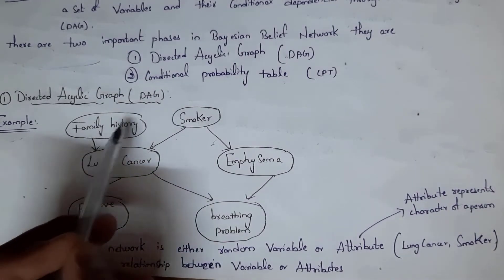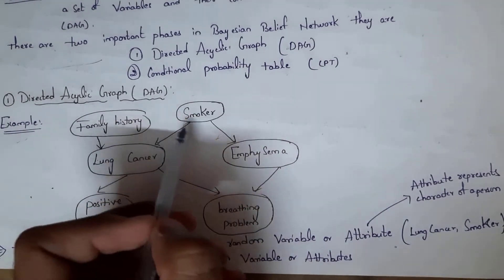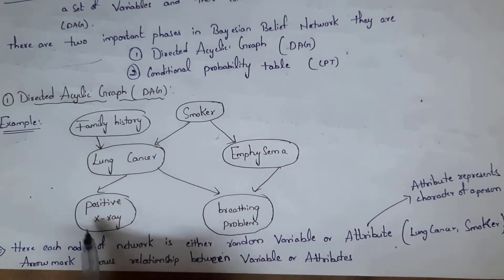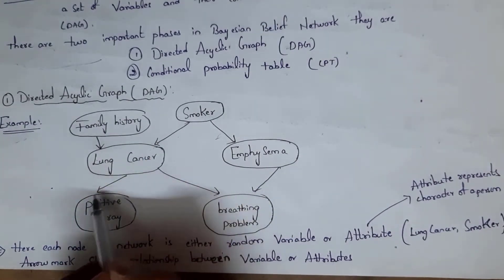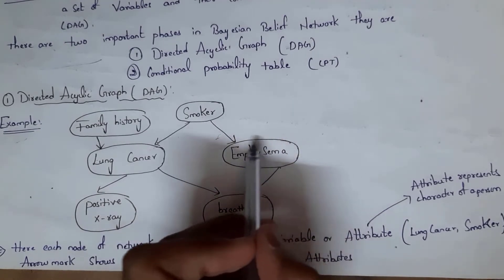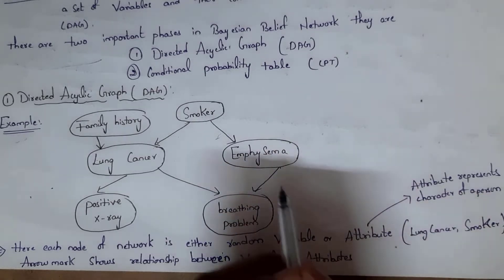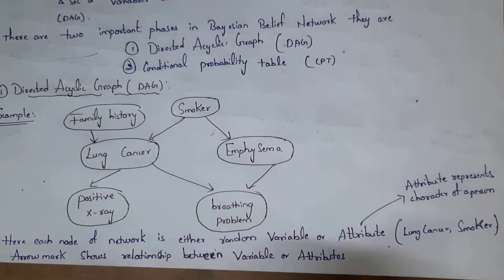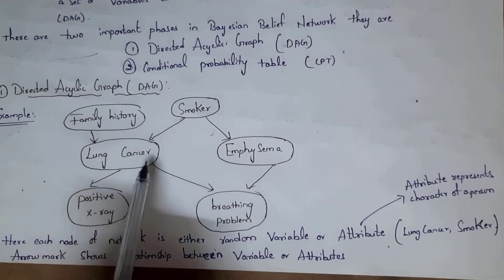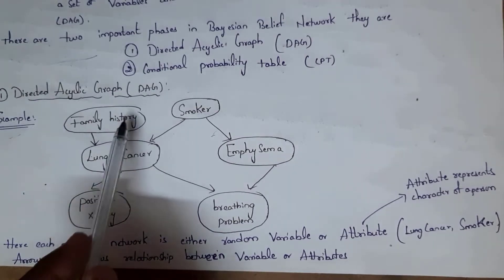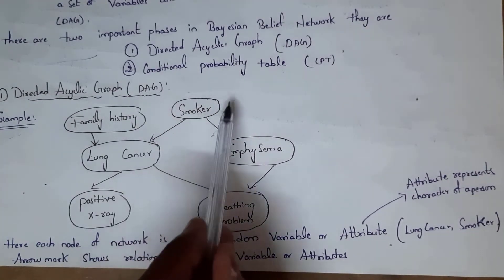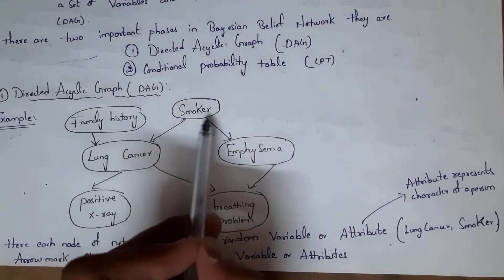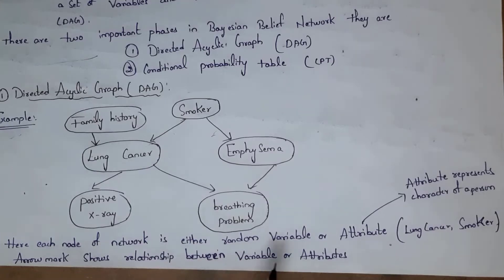Now, taking an example of lung cancer: there are two possibilities of getting lung cancer — family history and being a smoker. Smokers can also get emphysema. Lung cancer leads to a positive X-ray and breathing problems. Emphysema leads to breathing problems but not a positive X-ray. Each node in the network is either a random variable or attribute, and arrow marks show relationships between variables.